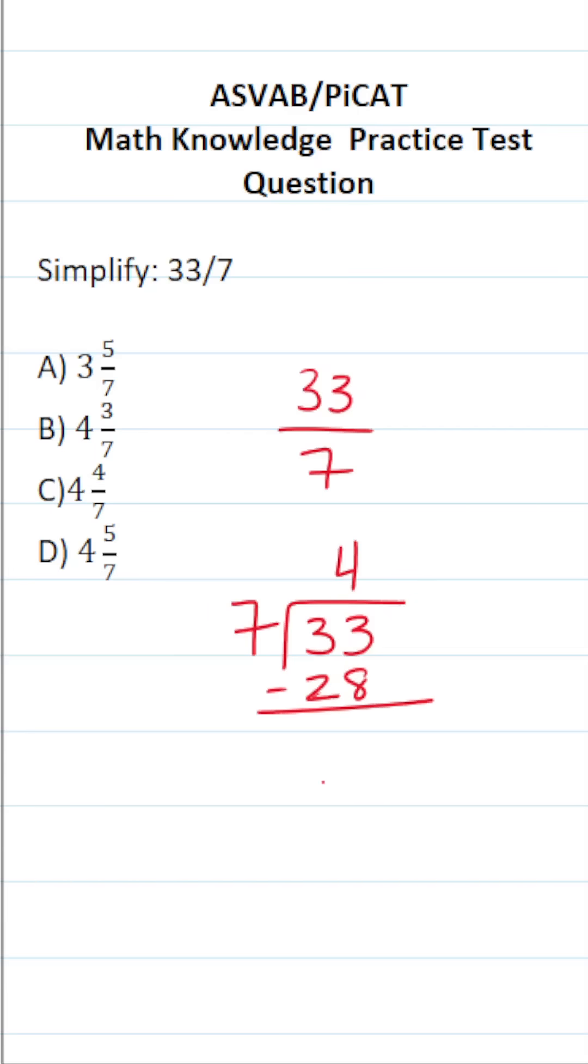If you can't do this math mentally, you could do it the long way. 3 minus 8, we can't do. We have to borrow. This becomes 2. This becomes 13. 13 minus 8 is 5. 2 minus 2 is nothing.